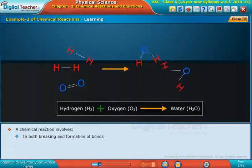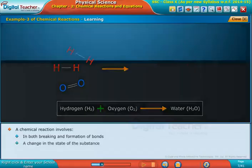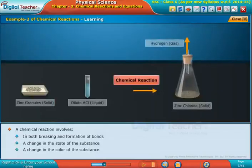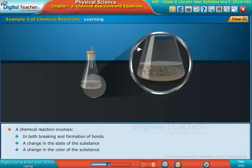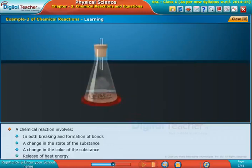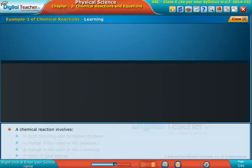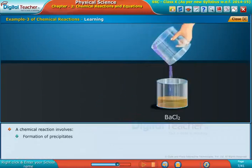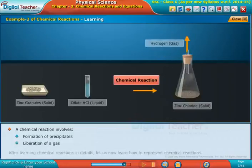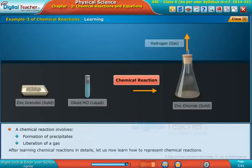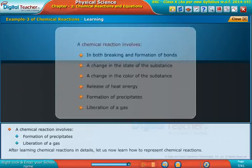A chemical reaction involves a change in the state of the substance, a change in the color of the substance, release of heat energy, formation of precipitates, and liberation of a gas. After learning chemical reactions in detail, let us now learn how to represent chemical reactions.